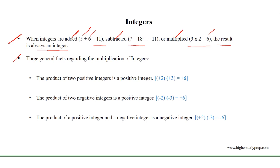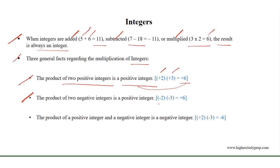There are three general facts regarding the multiplication of integers. The product of two positive integers is a positive integer. For example, plus 2 times plus 3 equals plus 6, where plus 6 is a positive integer. The product of two negative integers is also a positive integer. For example, minus 2 times minus 3 is equal to plus 6.